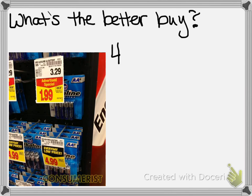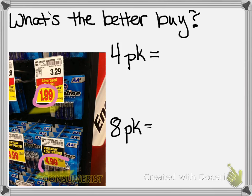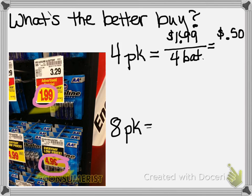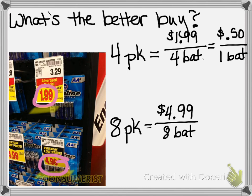Let's look at another example from Kroger. Kroger had a four-pack of batteries on sale for $1.99, and an eight-pack for $4.99. For the four-pack, I put $1.99 over four batteries and divide top and bottom by four — that gives me $0.50 for one battery. For the eight-pack, I put $4.99 over eight batteries and divide by eight — that gives me about $0.62 per battery. So the better buy is definitely the four-pack of batteries.